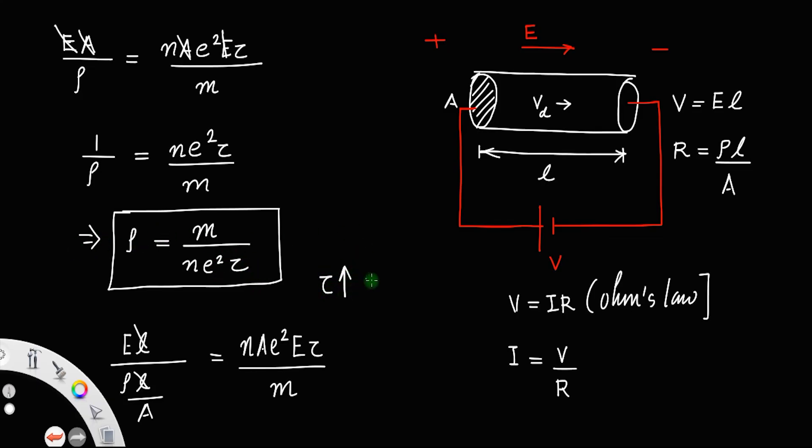Clearly if the relaxation time increases the resistivity decreases. From this expression, you know 1 by ρ is equal to reciprocal of resistivity is the conductivity σ. So σ will be ne²τ divided by m. Clear. Thank you.